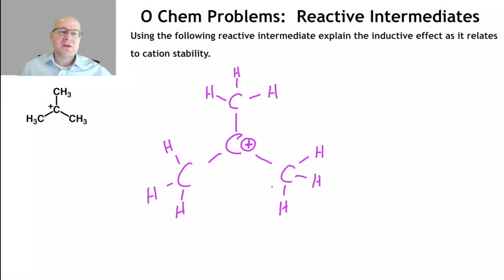Electronegativity is based on atomic size. The smaller you are in general, the more electronegative you are, because you have your electrons, your bonding electrons are closer to your nucleus, which can pull the electrons in.